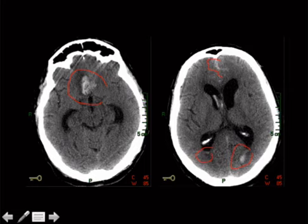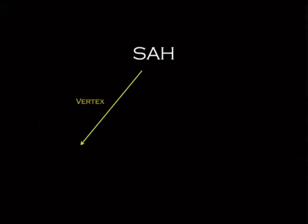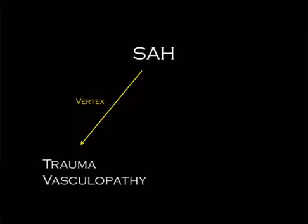There are a couple of different ways that cases can be worked up with regard to subarachnoid hemorrhage. The first question you want to ask yourself is: is the subarachnoid along the vertex? Those are usually trauma and vasculopathy cases. Or is the subarachnoid more basilar dependent? Those are the situations when you think about aneurysm.